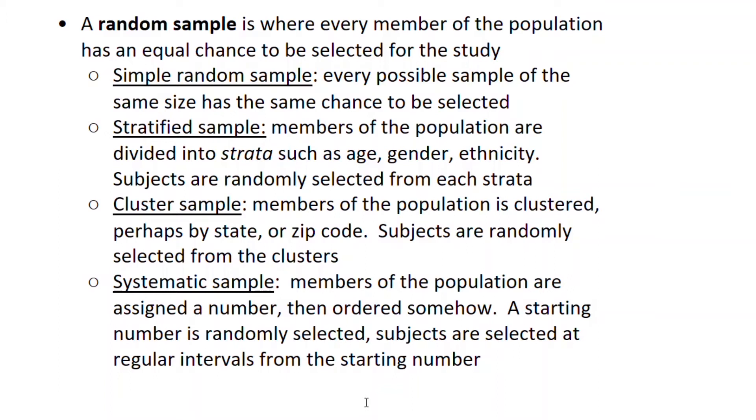The last type of sampling methodology I want to talk about is a systematic sample. In this case, every member of the population is assigned a number, and then members of the population are ordered in some way. Usually the starting number is randomly generated, and then sample members are selected at regular intervals from the starting number—maybe every one thousandth or every one ten thousandth person is selected. It's very easy to use, but it's not right in every situation. If there's a regularly occurring pattern in the data, you want to avoid this methodology.